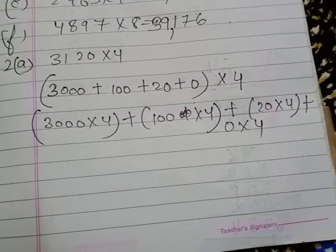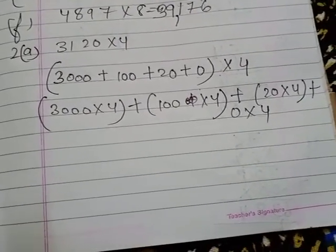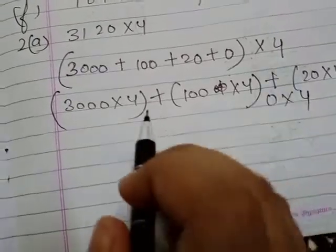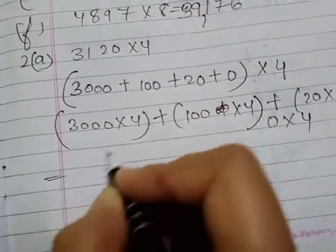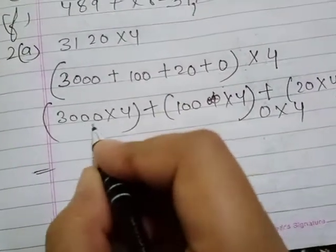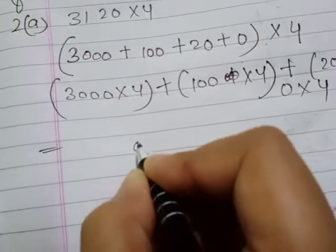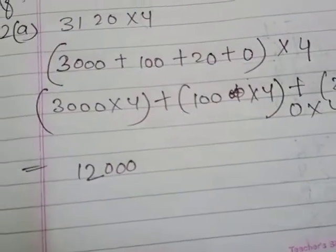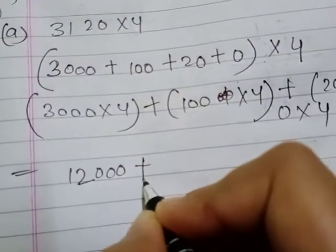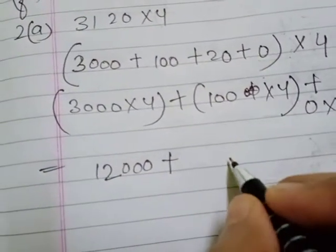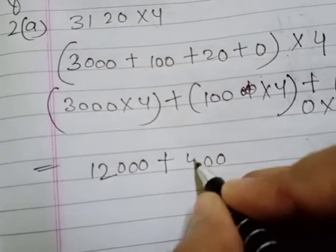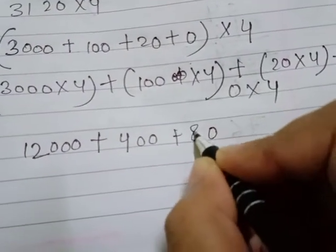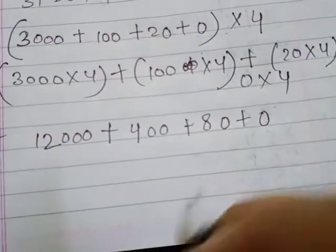Now how to multiply: 3 zeros are there, so we will write 0, 0, 0 — and 4 threes are 12. Then plus 100 multiplied by 4: 2 zeros are there, 4 ones are 4. Then plus 20 multiplied by 4: 1 zero is there, 4 twos are 8. Then plus 0 multiplied by 4: 4 zeros are 0.